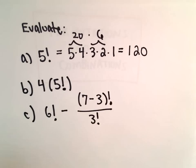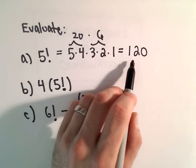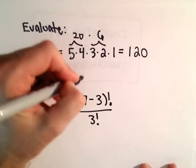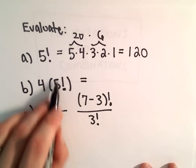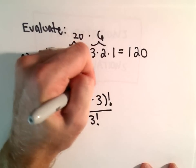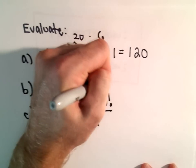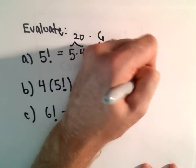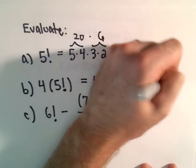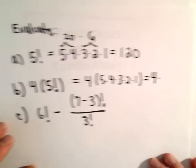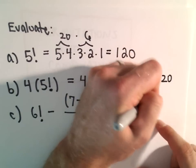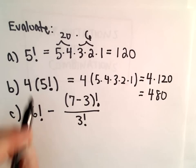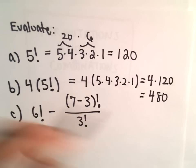Factorials get very large very quick. 5 factorial already bounced up to 120. Suppose we want to do 4 times 5 factorial. Well, you need to do the factorial first, or it doesn't hurt to write it all the way out. So, this is 4 times, again, 5 times 4 times 3 times 2 times 1. Well, we've already seen that 5 factorial is 120. So, 4 times 120, if we simplify that, we get 480. So, 4 times 5 factorial is 480.